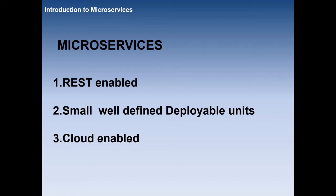The second characteristic is being small, well-defined deployable units. Every microservice should have a boundary with some definition — there should be some boundary associated with the microservice. It should be independently deployable. Today you may have two microservices, tomorrow three, and eventually n number of microservices — each should be independently deployable.